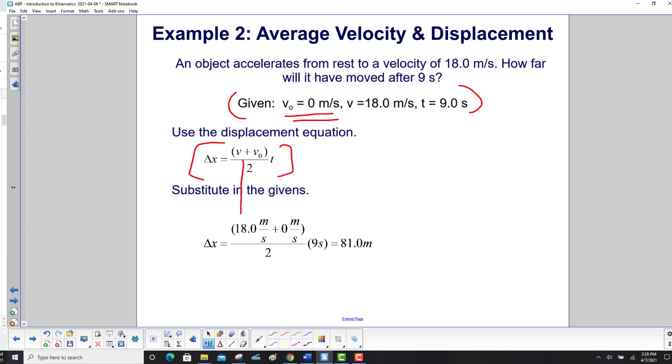So here's our final velocity. Here's our initial. Divide that by two. Multiply it by the elapsed time. And we get 81 meters.